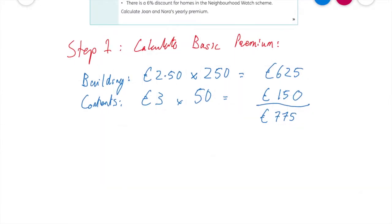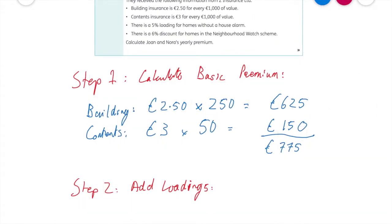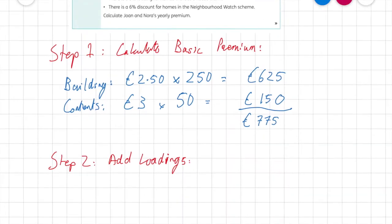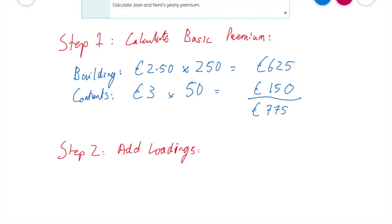Now it doesn't stop there unfortunately because there's more to it. I now need to go into my second step which is I'm going to add on my loadings. Step two is add loadings. Let's see what our loadings say in the question. So we're told there's a 5% loading for homes without a house alarm. Do they have a house alarm? No, we're told in the question, they have no alarm.